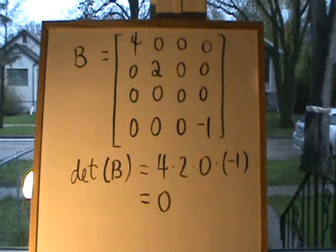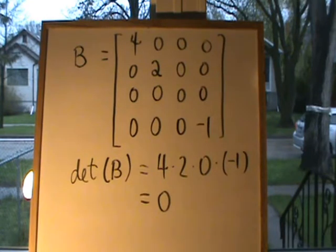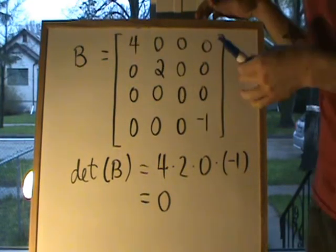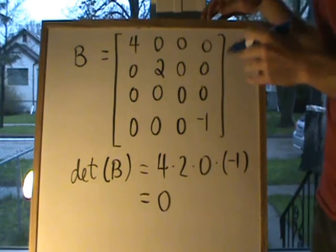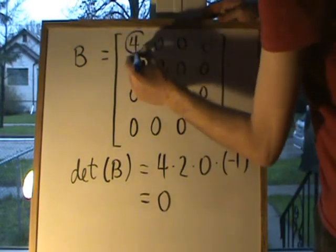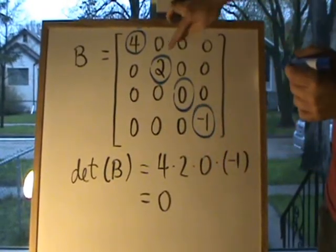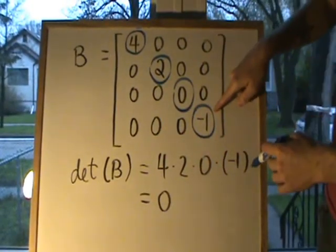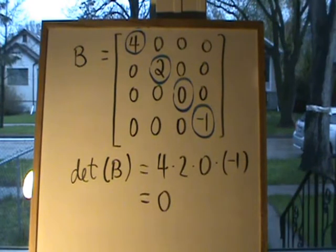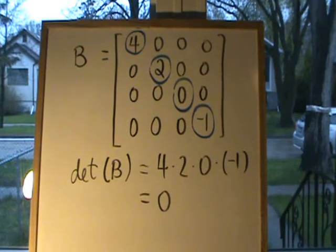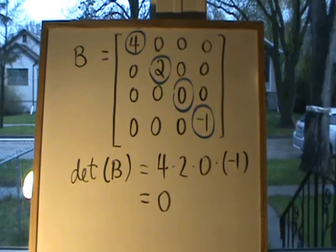Our theorem also says that a diagonal matrix is going to have a determinant of 0, provided that one of the entries on the main diagonal is equal to 0. So multiplying out 4 times 2 times 0 times negative 1 gives an overall determinant of 0. If there is a 0 on the main diagonal of a diagonal matrix, we know that matrix is not going to be invertible.